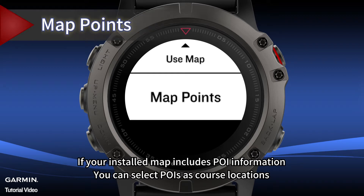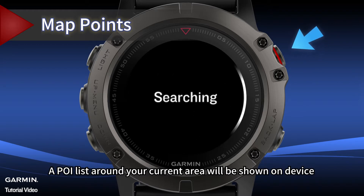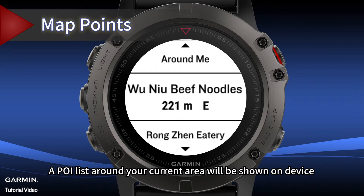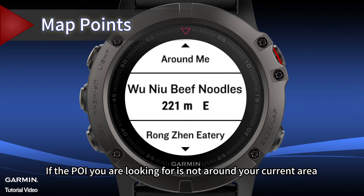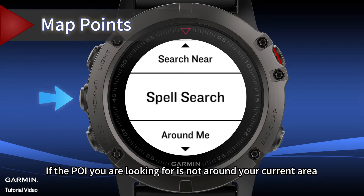If your installed map includes POI information, you can select POIs as course locations. Select Category, and a POI list around your current area will be shown on the device.